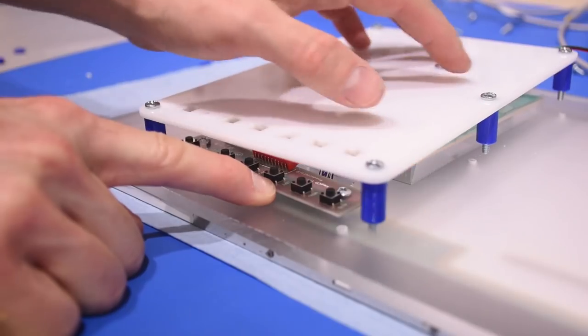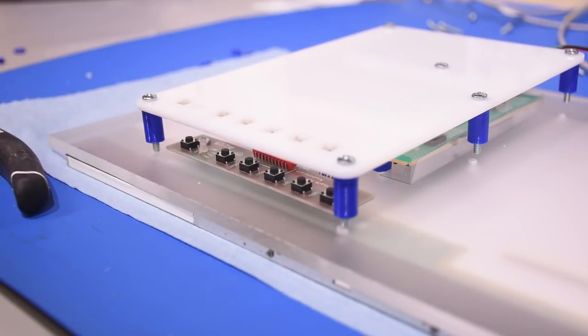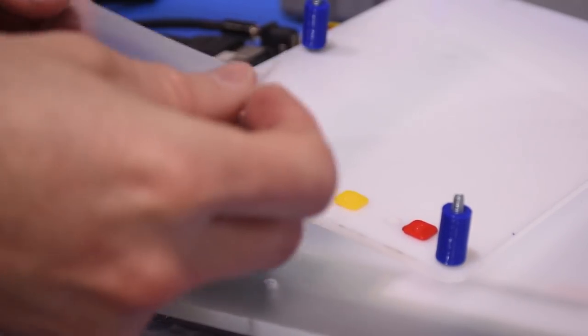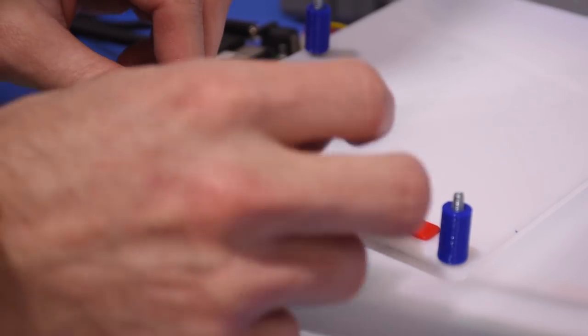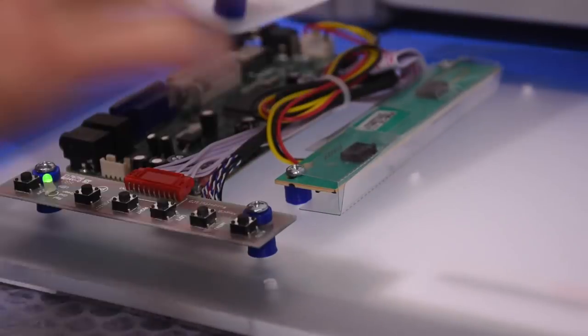I did make a mistake here and printed my button board standoffs the same height as the other board standoffs so I had to make new ones. I also made some colored buttons. This isn't really necessary but I thought it would look nice. The tape holds them in place while I flip it over.